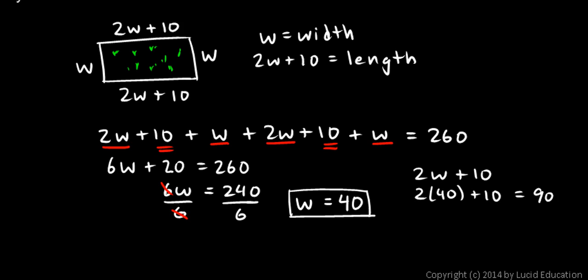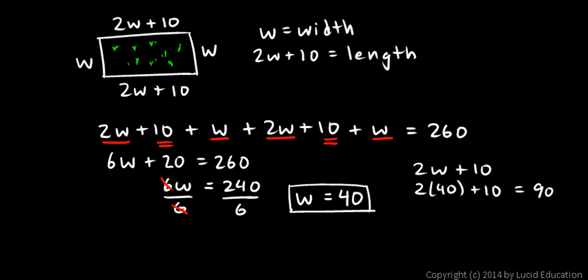So the width is 40, and I can write that the length is 90. And that's my answer. Or if you wanted to, you could say 40 yards by 90 yards. That would be a common way to write it as well.